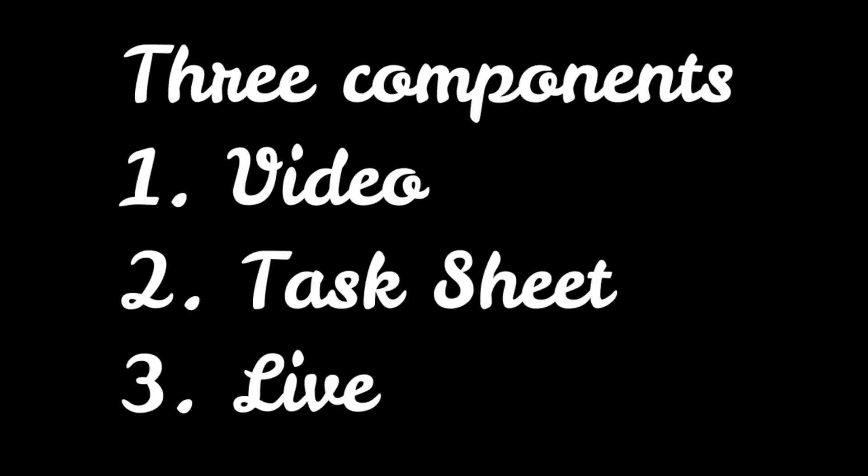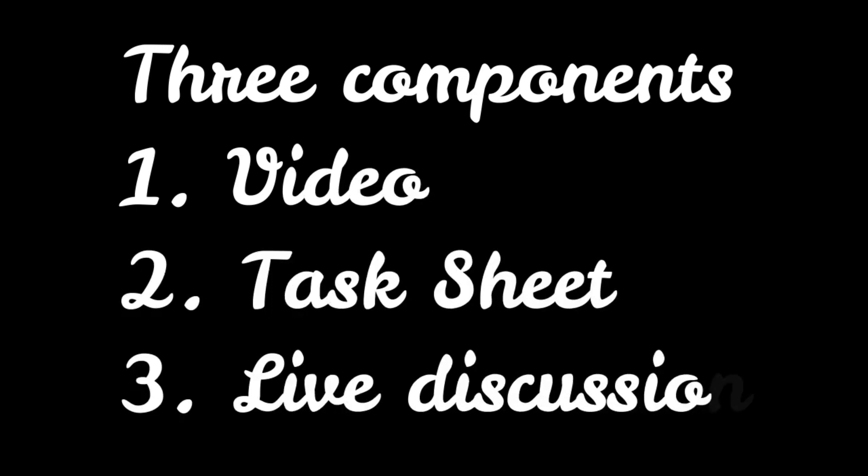Now the boring part. This course consists of three components. The first component is this video, which outlines three critical thinking processes. The second component is a task sheet, which contains questions related to the content of this video. And the last component is a live informal discussion where we can discuss matters related to this video and the task sheet.